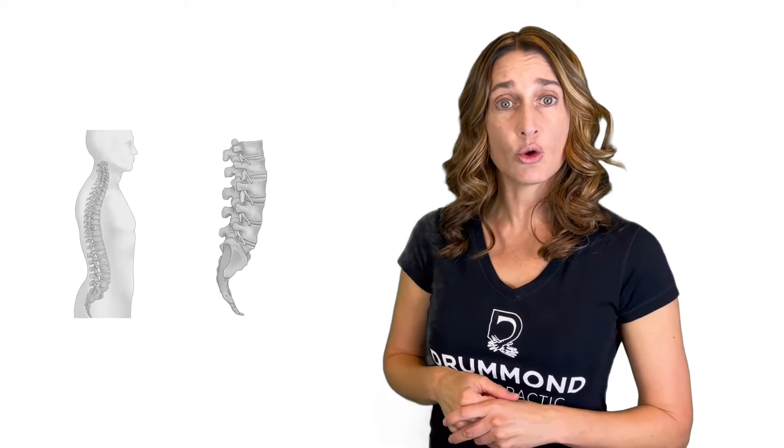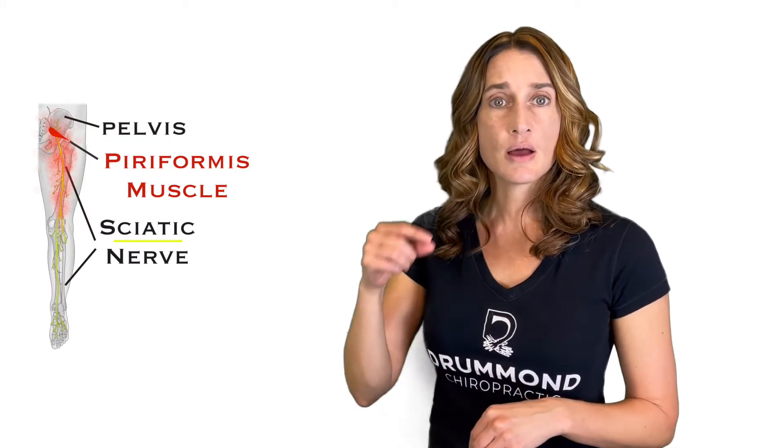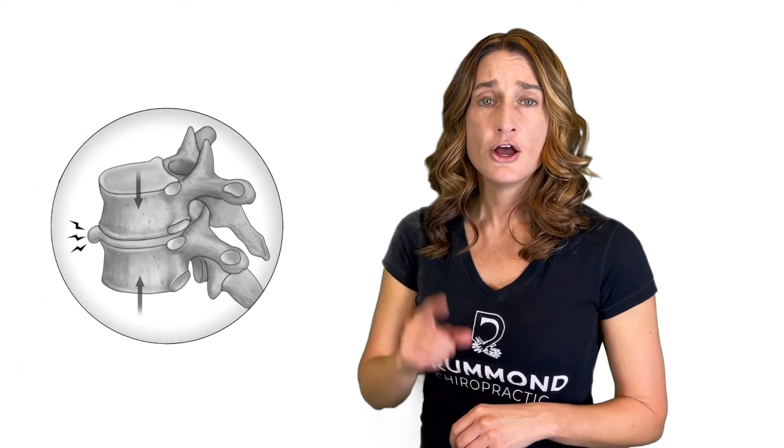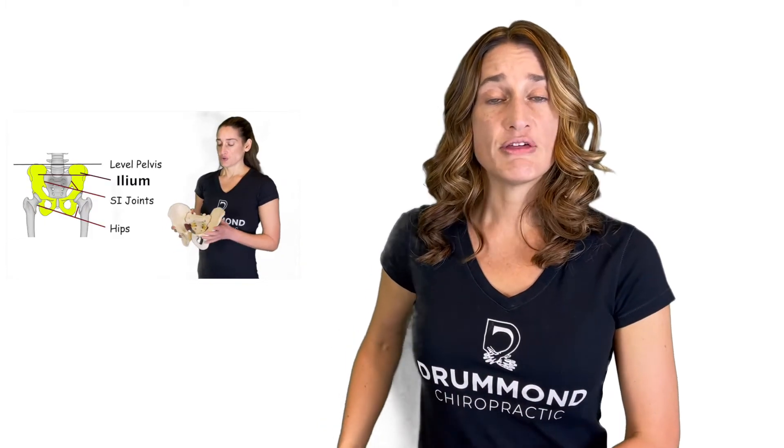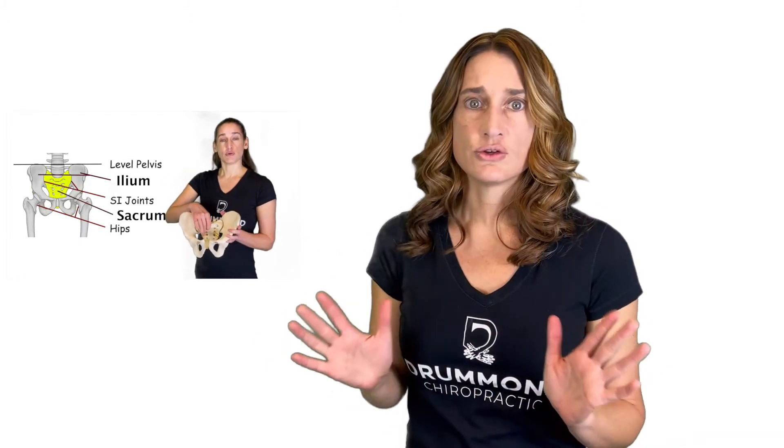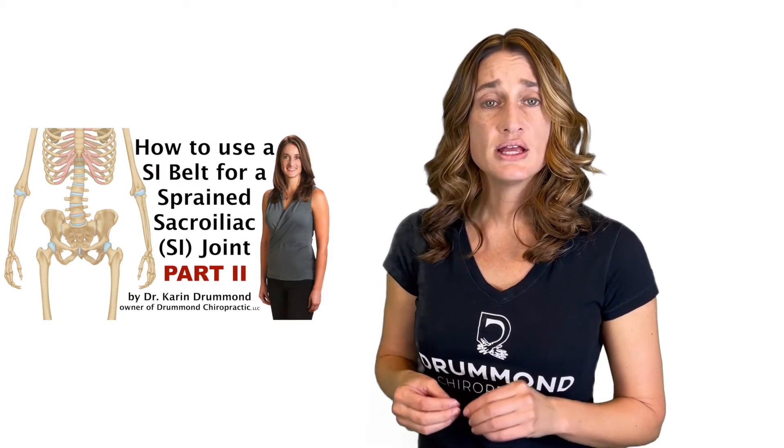Three, make sure they're checking the low back. Maybe there's nothing wrong with your hip at all — maybe the pain is coming from a pinched nerve in your low back. Four, make sure they're checking your SI joints. A lot of times people will feel pain in their hip or around where they think their hip is, but it's due to a sprained SI joint. I have several videos on this topic alone — check out my videos on SI sprains and SI belts to learn more.